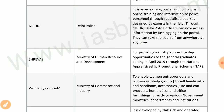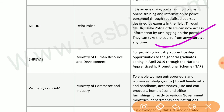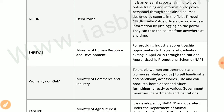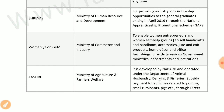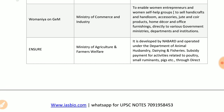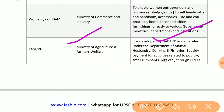Nipun by Delhi Police is an e-learning portal providing online training and information to police personnel through specialized courses. SHREYAS by the Ministry of HRD provides industry apprenticeship opportunities to general graduates. WoManiya on GeM by the Ministry of Commerce and Industry enables women entrepreneurs and women self-help groups. ENSURE by the Ministry of Agriculture and Farmer Welfare, developed by NABARD under the Department of Animal Husbandry, Dairying and Fisheries, manages subsidy payments for activities related to poultry, small ruminants, and pigs through direct bank transfer.